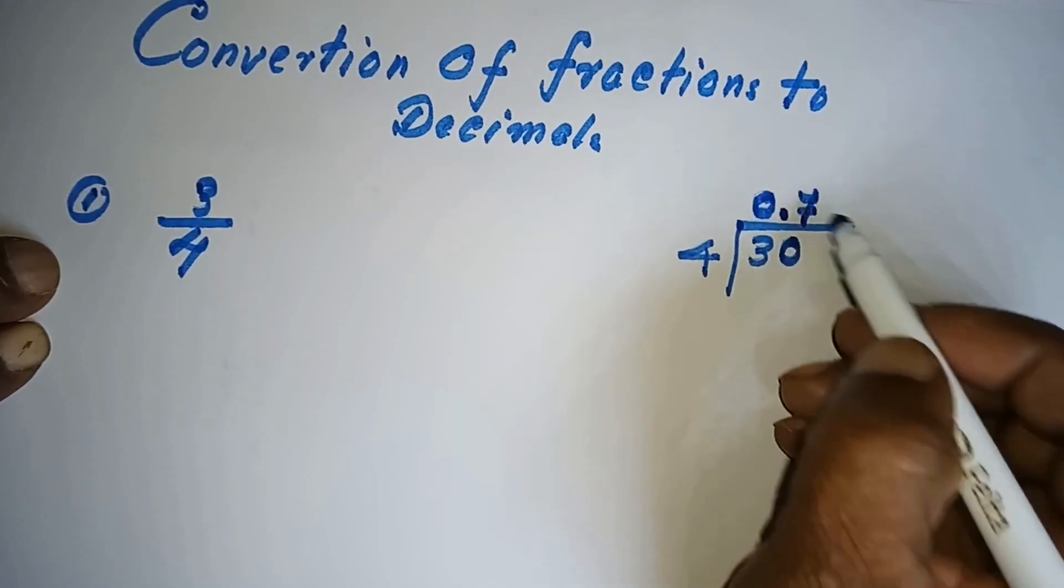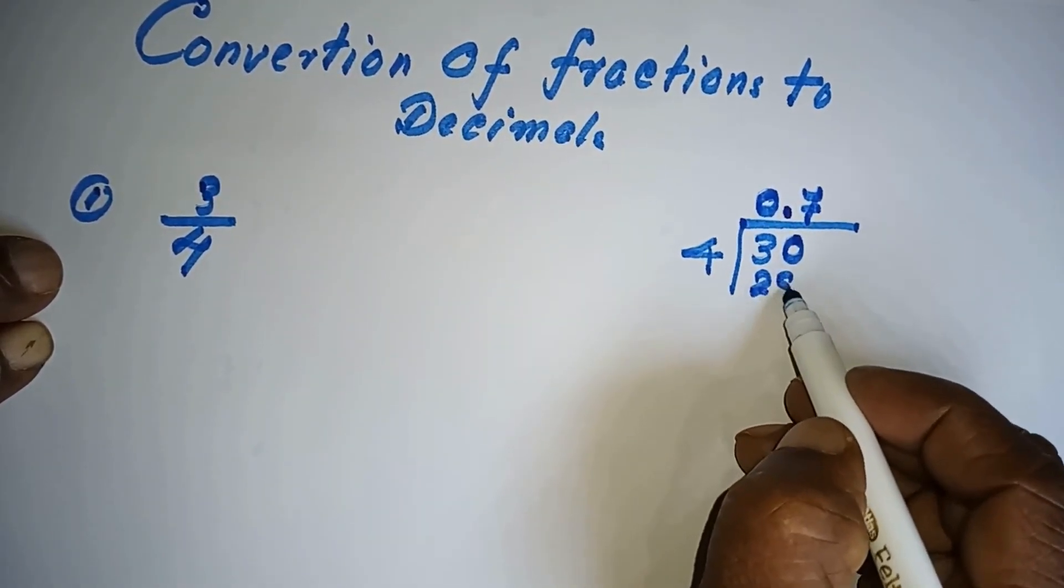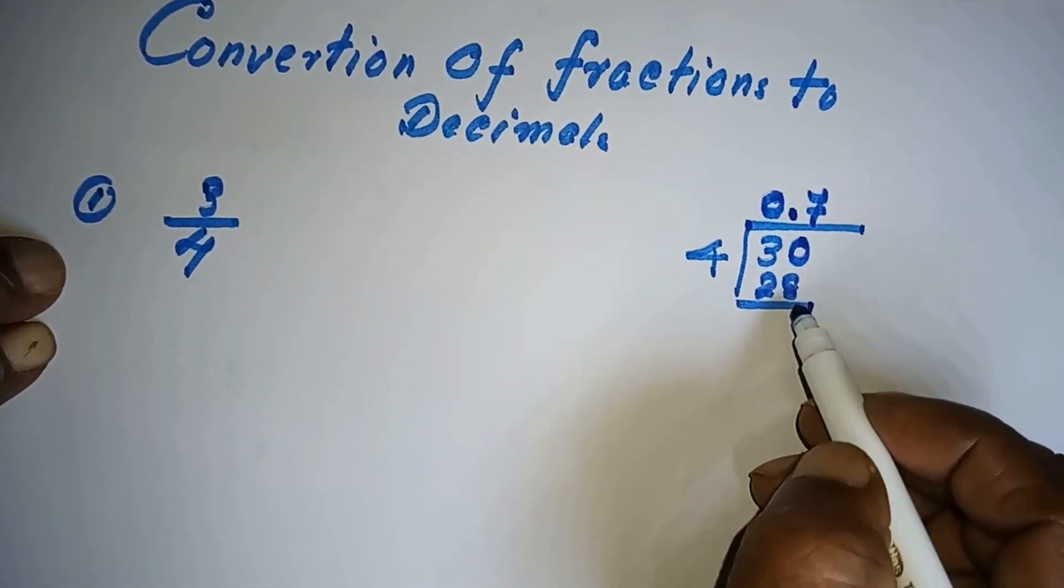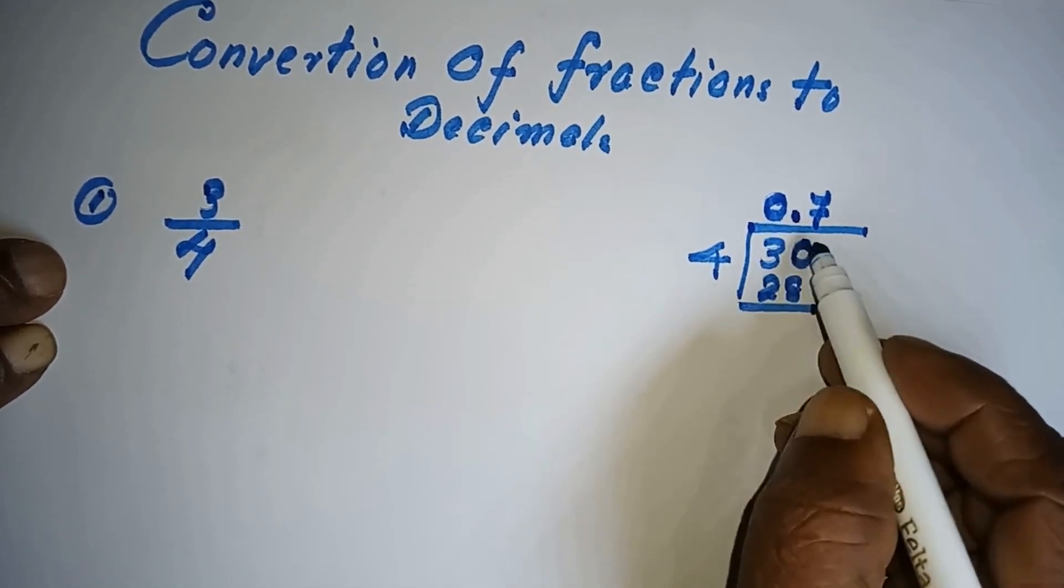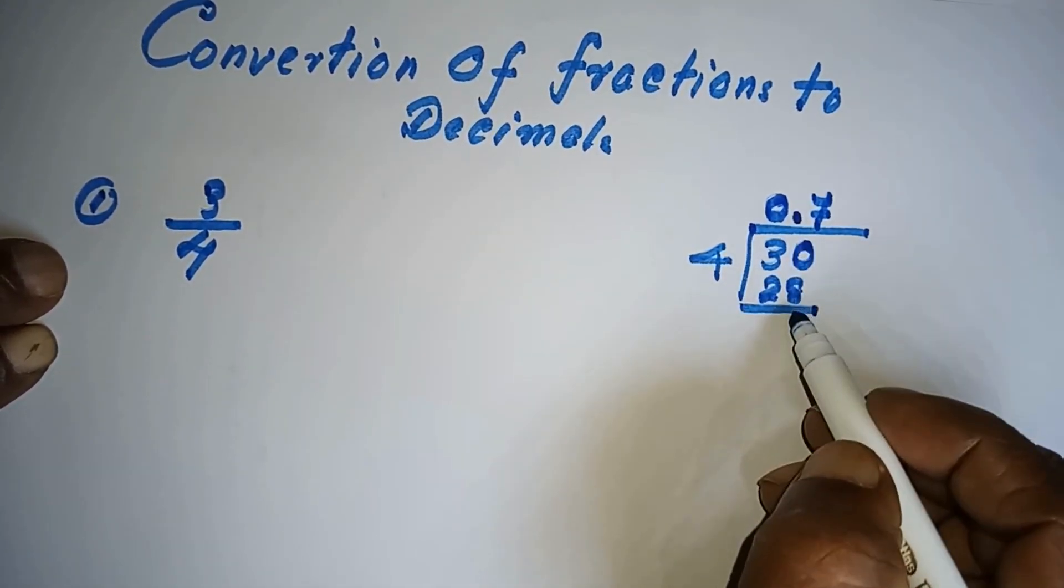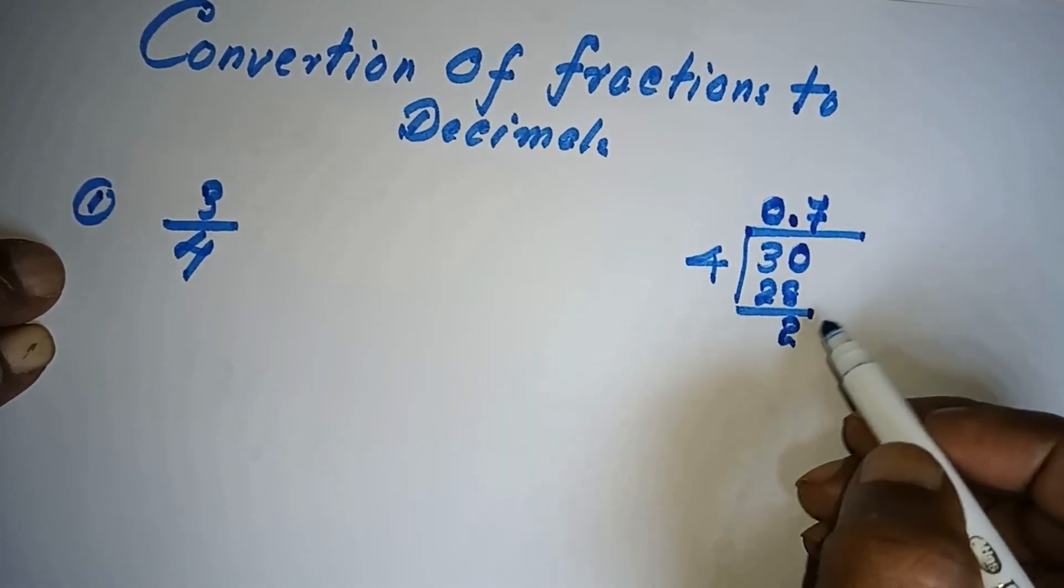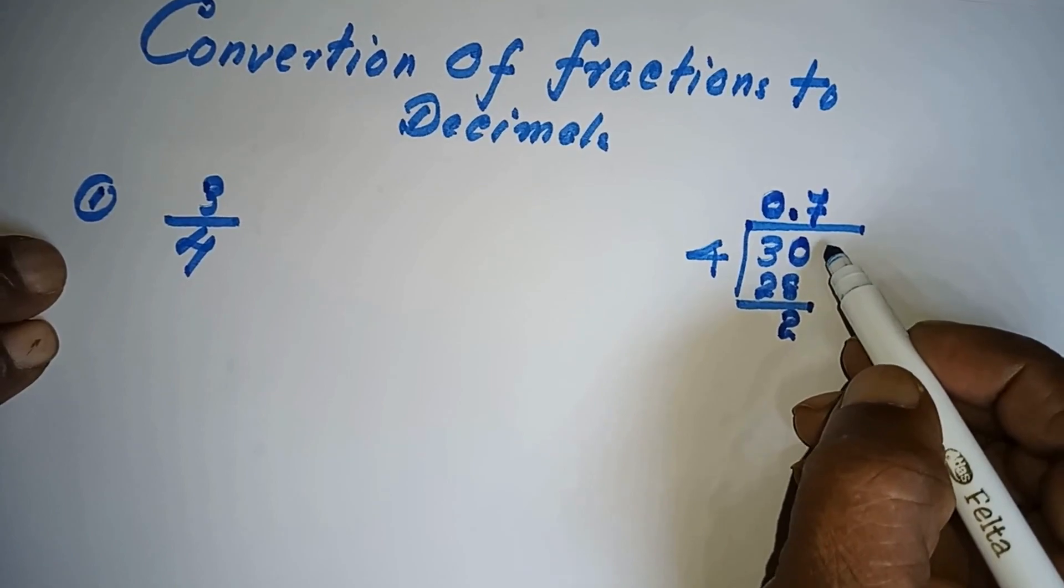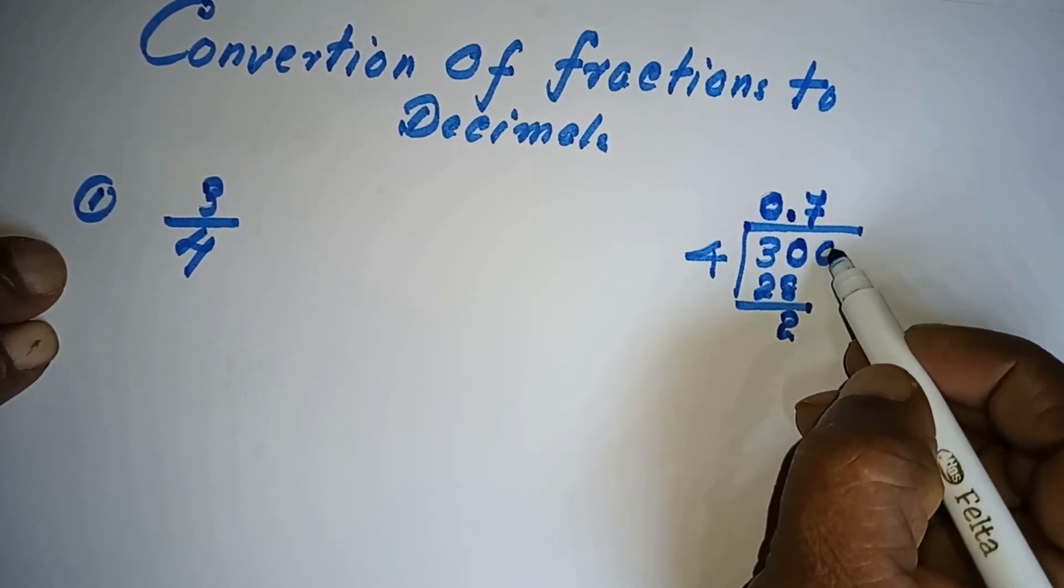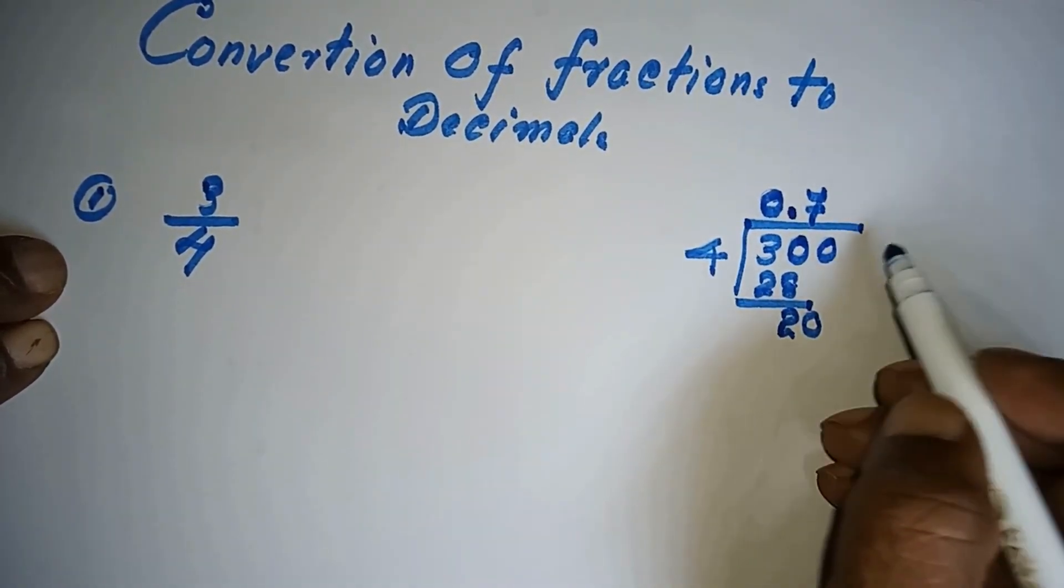4 into 7 is 28, so the balance when you subtract 28 from 30 is 2. Again we take another 0 here.